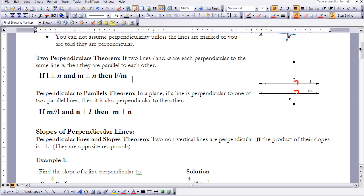The next theorem, perpendiculars to parallels theorem, says in a plane, if a line is perpendicular to one of two parallel lines, then it's also perpendicular to the other. It uses that same corresponding angles postulate. If I know these lines are parallel, then I know these angle measures have to be equal. If one of them is 90, that means the other has to be 90. Without going through the whole corresponding angles postulate, I can just use the perpendicular to parallels theorem. In symbols: if M is parallel to L and N is perpendicular to L, then M is perpendicular to N.